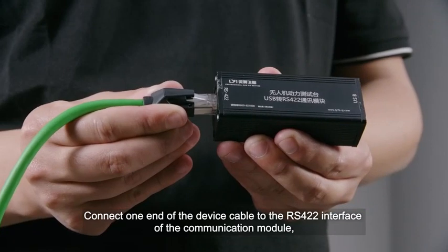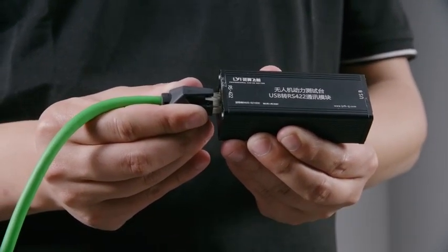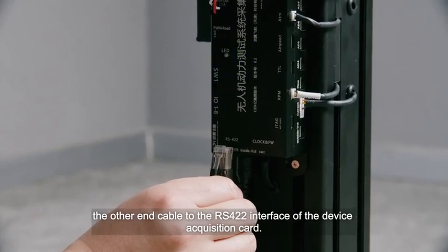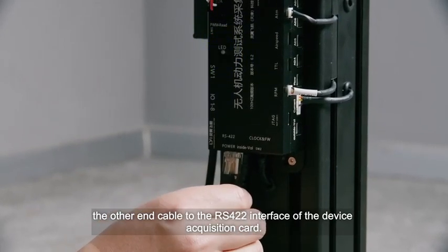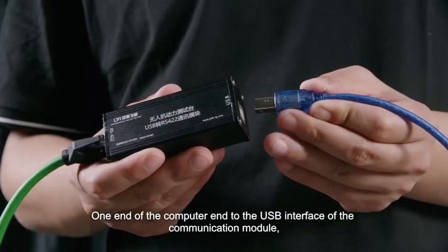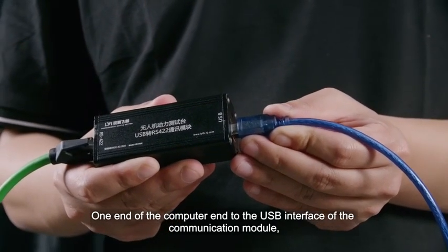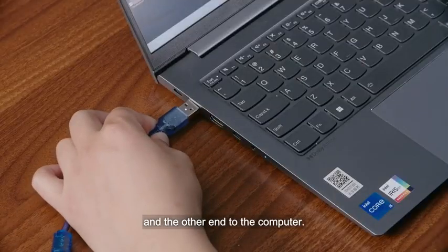Connect one end of the device cable to the RS422 interface of the communication module. The other end cable to the RS422 interface of the device acquisition card. One end of the computer end to the USB interface of the communication module and the other end to the computer.